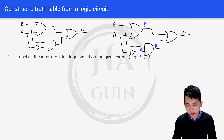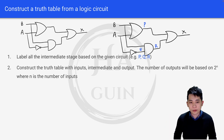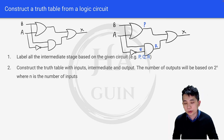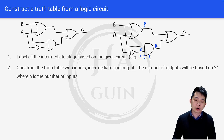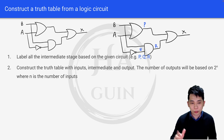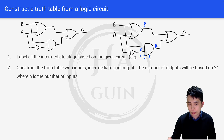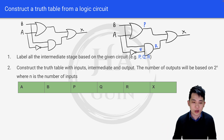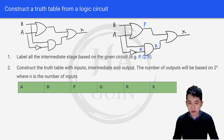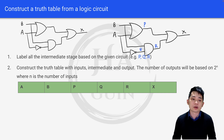Next, I'm going to construct a truth table with inputs, intermediate values, and output. Bear in mind that the number of rows will always be 2 to the power of N, where N is the number of inputs. Since we have two inputs, we get 2 to the power of 2, which is 4 rows. The table has columns A, B, P, Q, R, and X — mixing inputs, intermediates, and output into one single table.